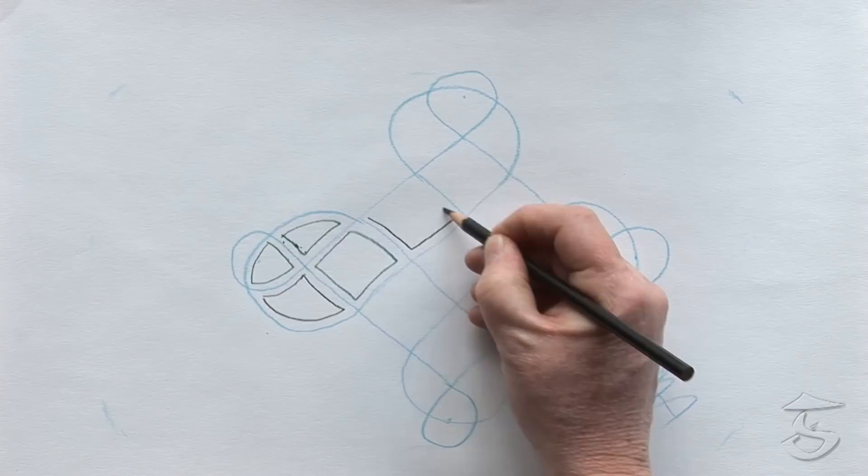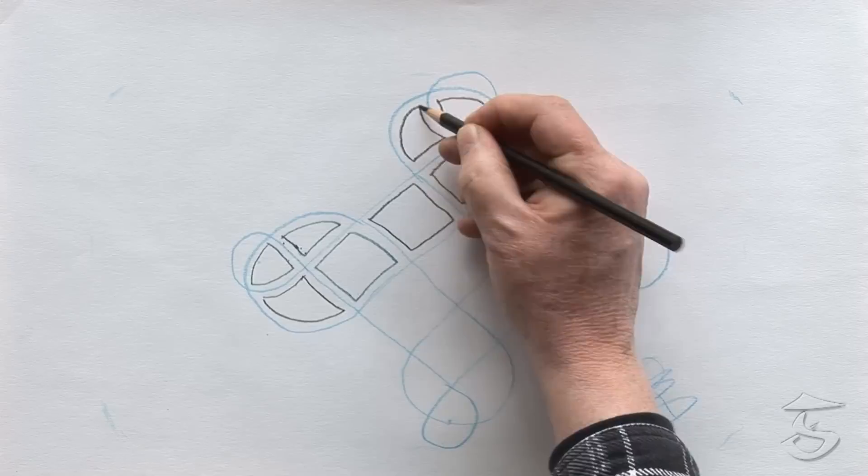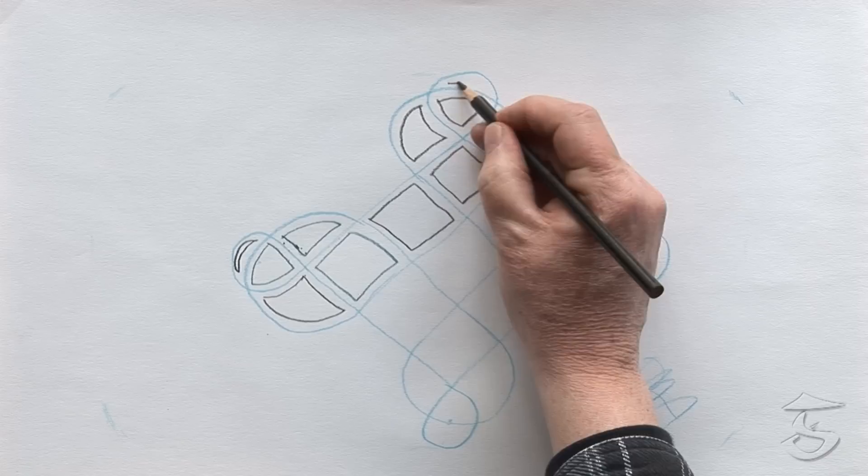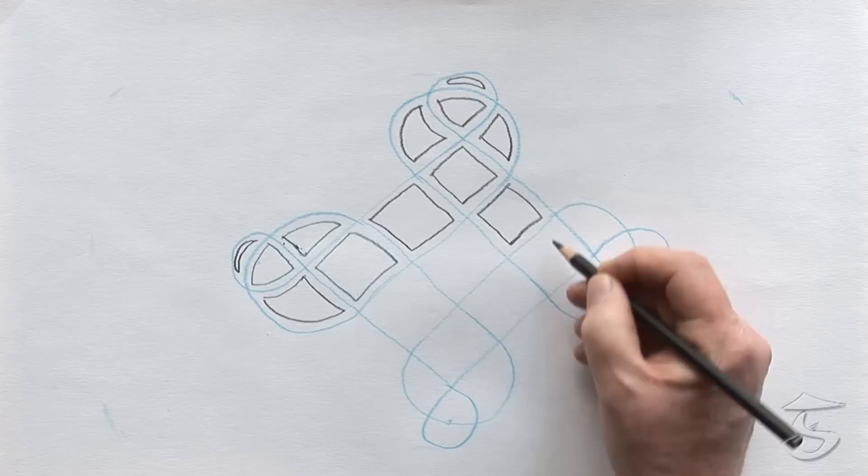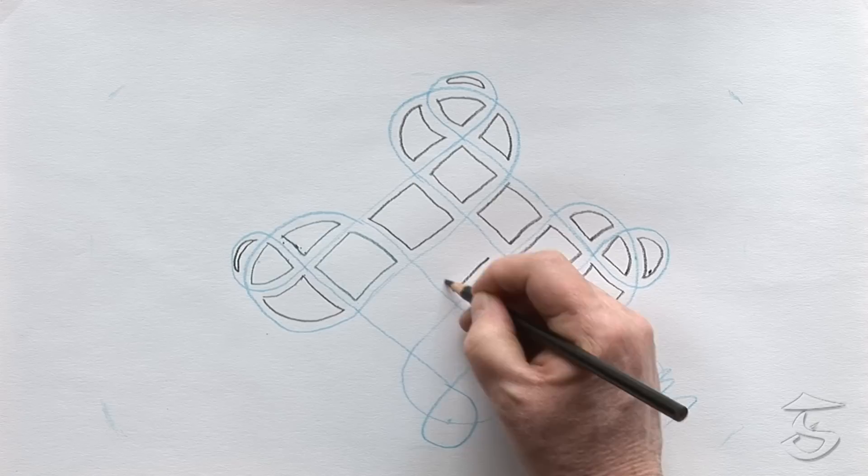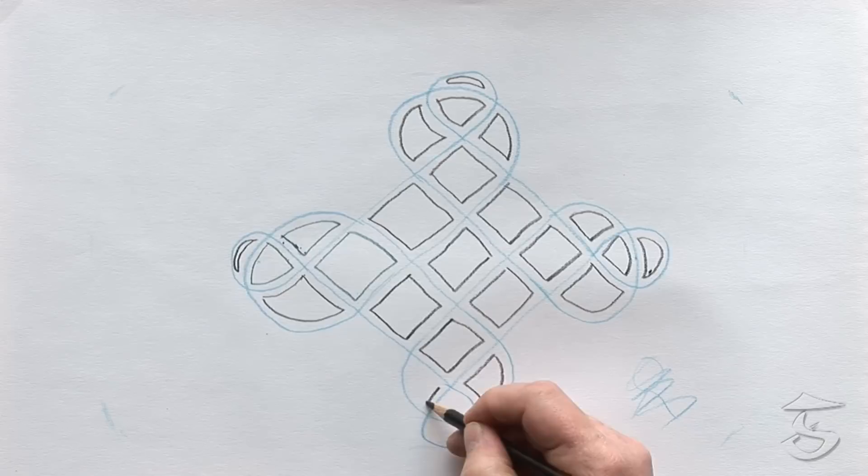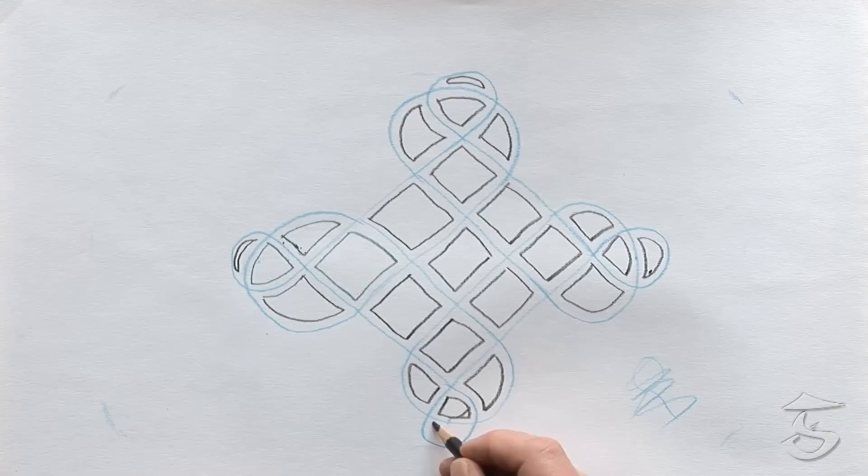This one takes a little bit longer. You can extend the grid out in all directions. But it's quite a nice one and you can fill in a nice background area with it. Oh, I forgot the tips there. This one takes a little longer. It has a lot more intersections or unders and overs as we like to call them.